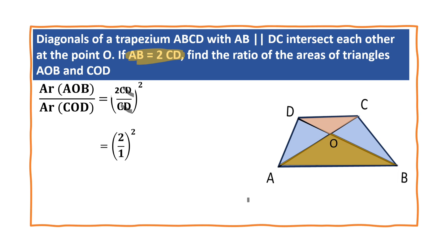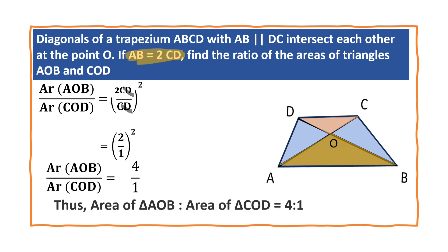Triangle AOB by triangle COD is equal to (2/1) squared. 2 squared is 4 and 1 squared is 1. So, area of triangle AOB by area of triangle COD is equal to 4 by 1. Thus, area of triangle AOB to area of triangle COD is equal to 4:1.